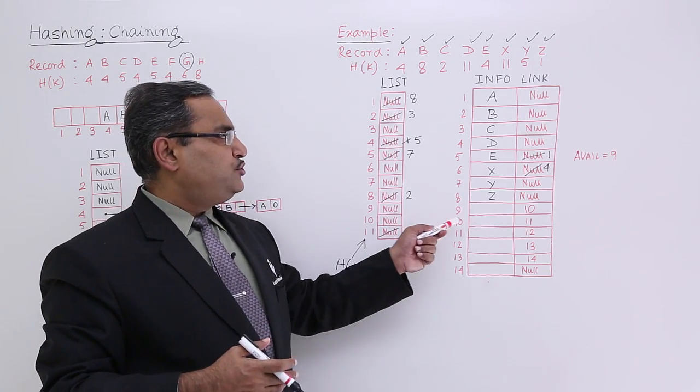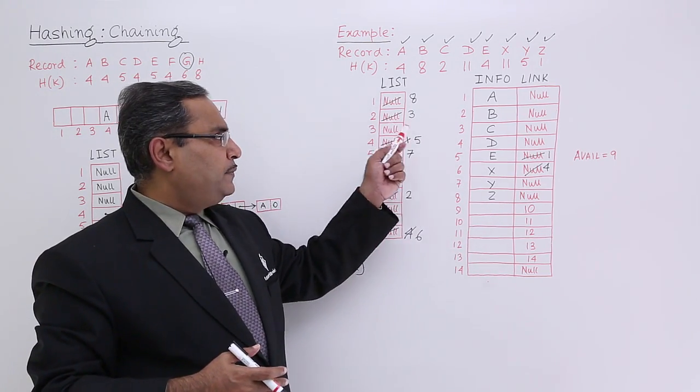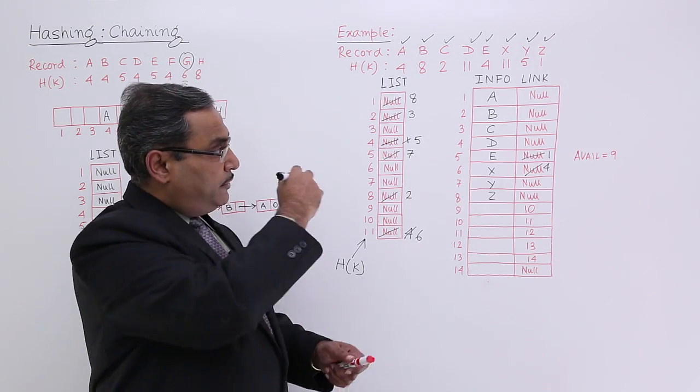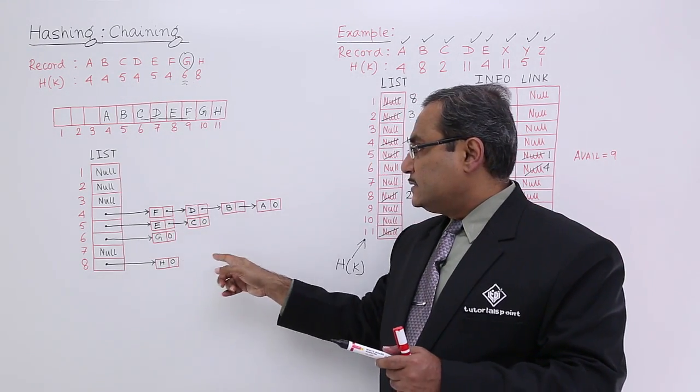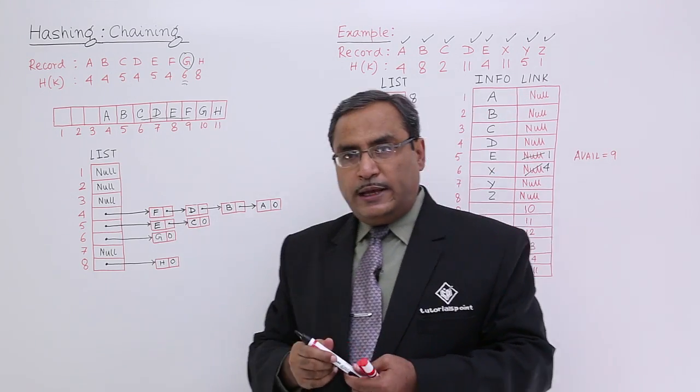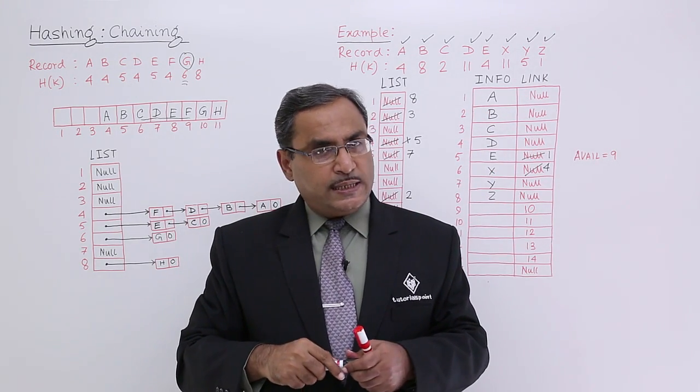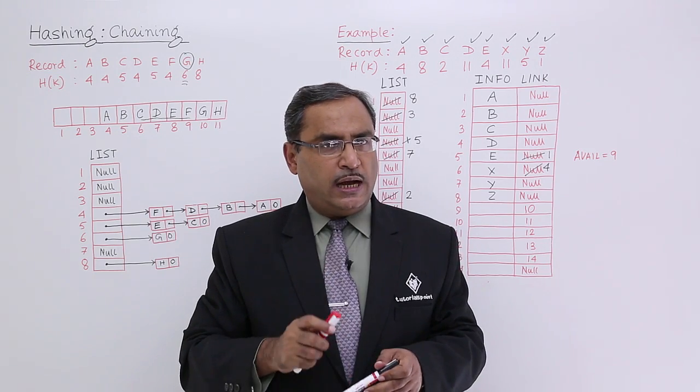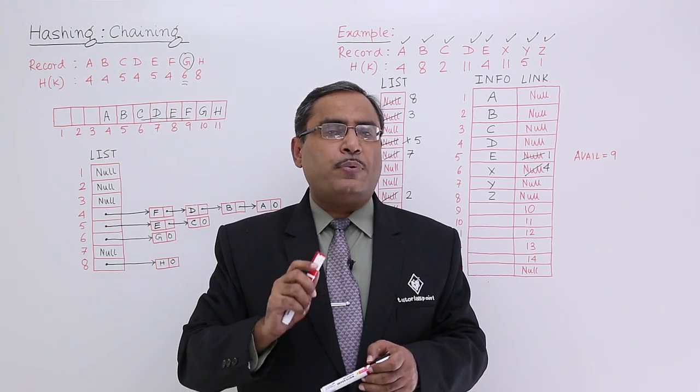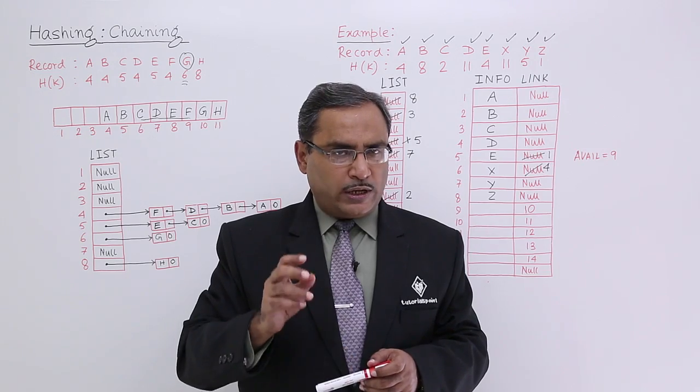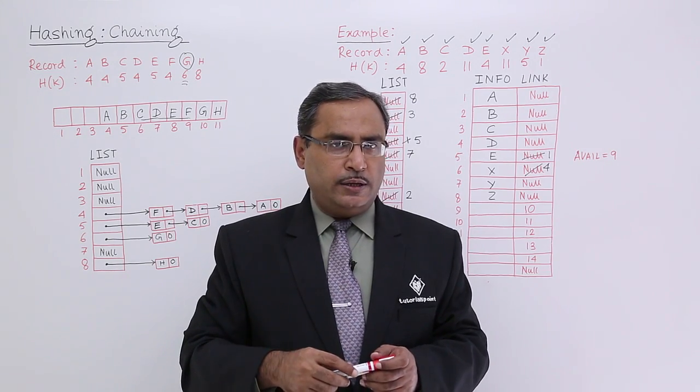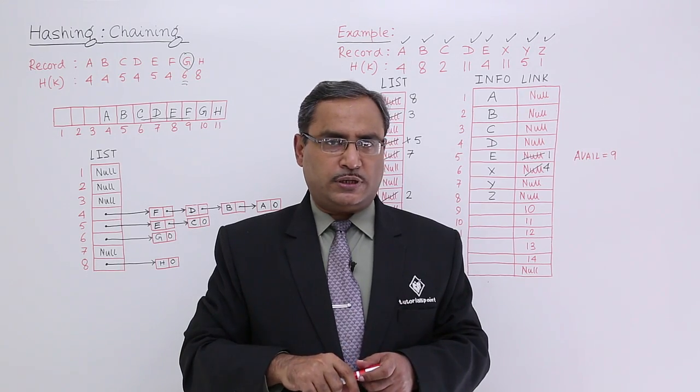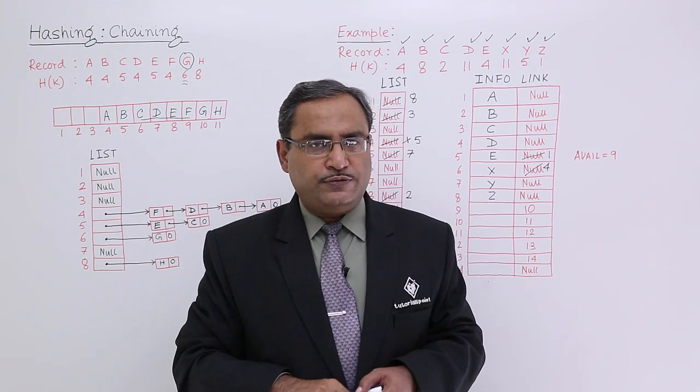And this is known as chaining. Here I have done the link field updates. But if I draw the respective linked lists, then it will be coming like this. In this way, we have completed chaining. The concept of chaining and explanation of chaining we have given through a proper example. Please watch this video and the earlier video under the topic chaining. That will clear up your conception. Thanks for watching this video.